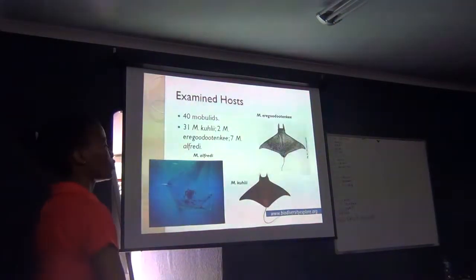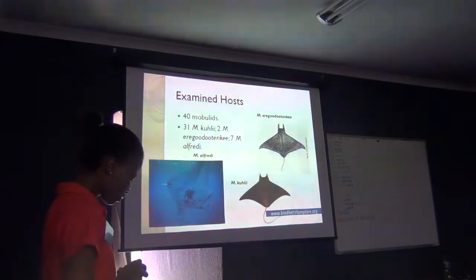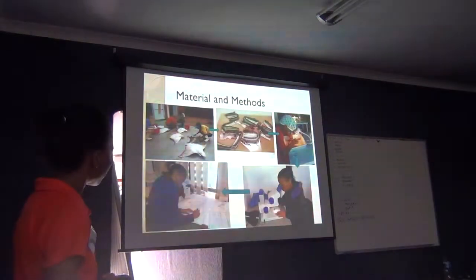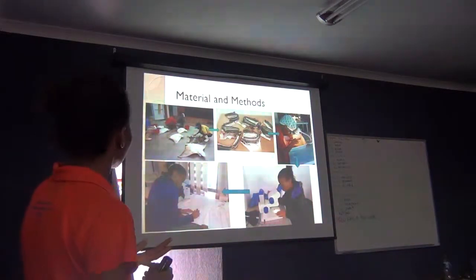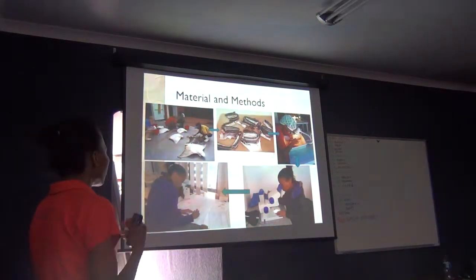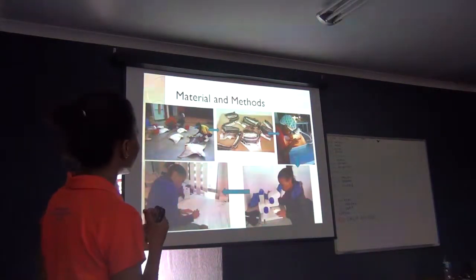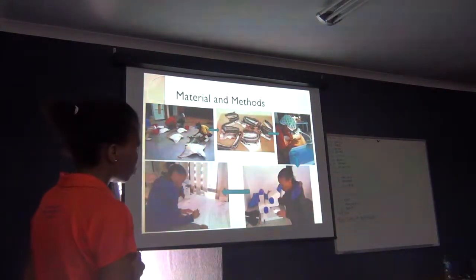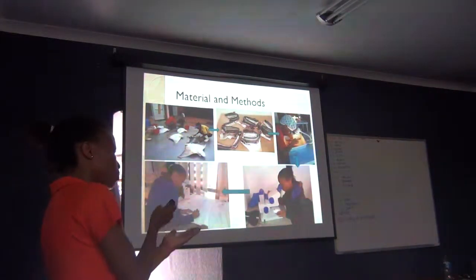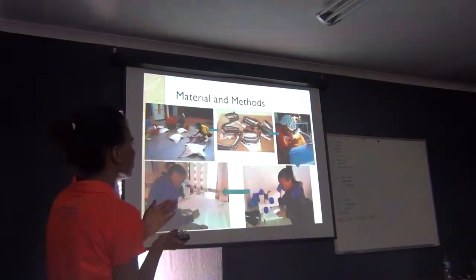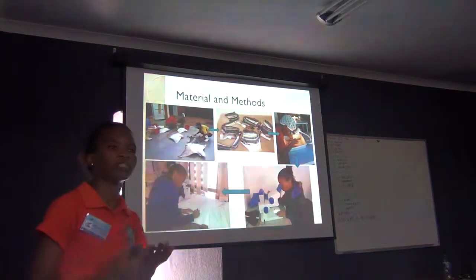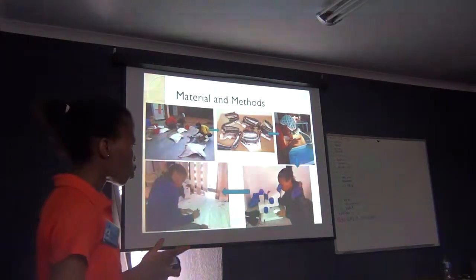We were able to collect 40 mobula rays: 31 were Mobula kuhlii, 2 were Mobula erogoduitenki, and 7 were Manta alfredi. When we get the hosts, we immediately examine them externally to find which copepods are attached on the outside, then we cut out the gills and page through the filaments like paging through a book — each filament is examined because copepods embed themselves between the filaments. Afterwards, the copepods are fixed and preserved in 70% ethanol and viewed under the microscope for identification.